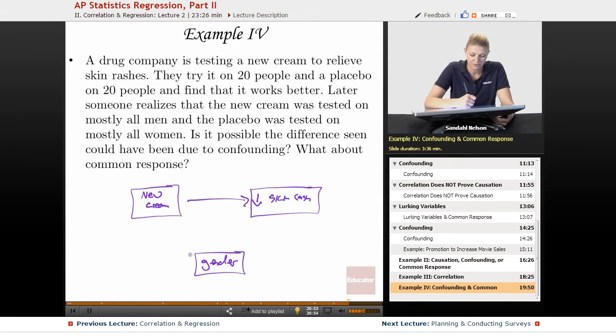Okay, and we do know that gender is associated with whether or not someone got the new cream. And we do know that gender may be associated with how sensitive someone's skin is. So gender is going to be a confounder. Because it may make it look like the new cream is leading to decreased skin rashes. But really, it's that more people got the new cream, and more males got the new cream, and males have maybe less sensitive skin.